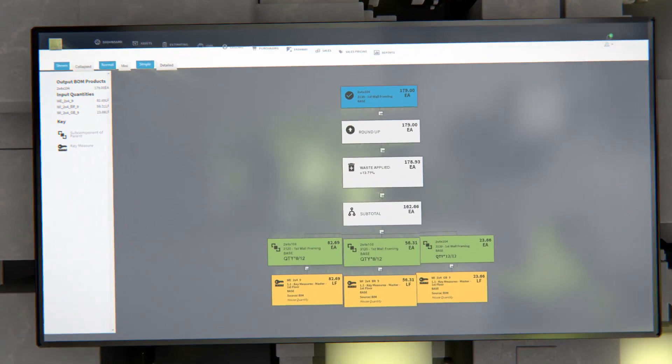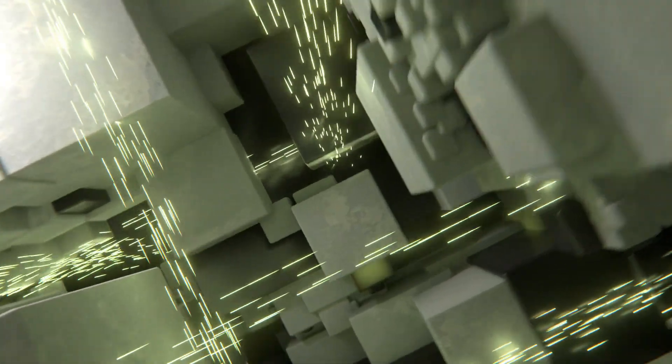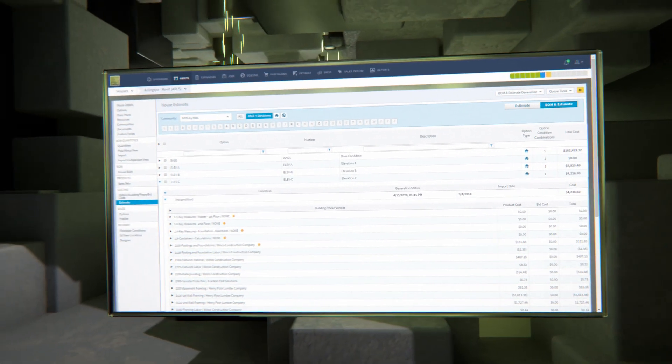The estimating module has a dynamic engine that uses BIM data to keep every budget fueled with the most current information. The costing module uses actual vendor prices to determine true construction costs.